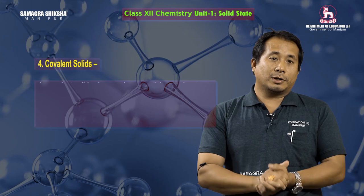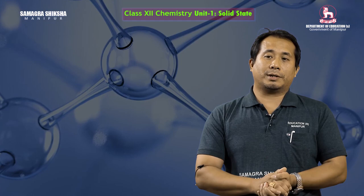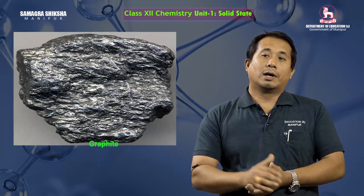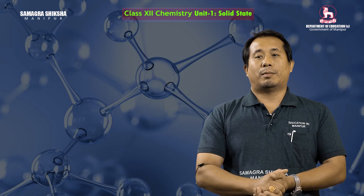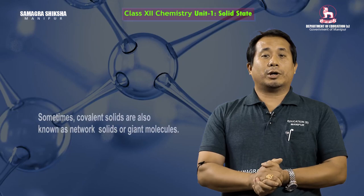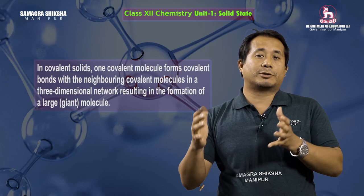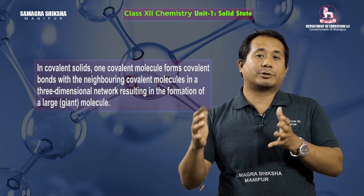The last type is covalent solid. In covalent solids, the constituent particles are atoms held together by covalent bonds. Examples include diamond and graphite. Covalent solids have very high melting points, are generally very hard, and do not conduct electricity — except graphite. Each atom forms covalent bonds with neighboring atoms in a three-dimensional network, resulting in the formation of a large giant molecule.